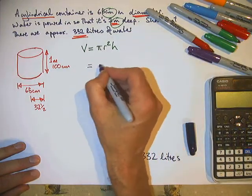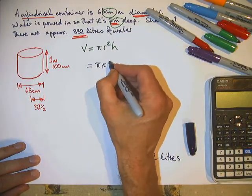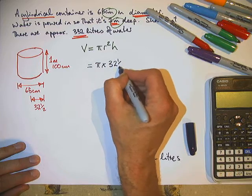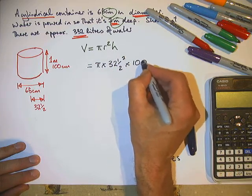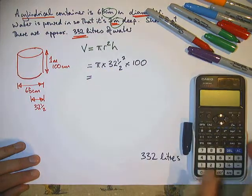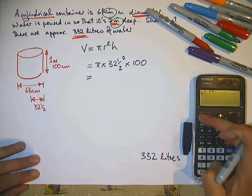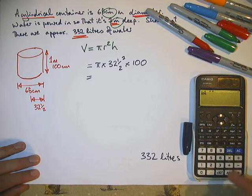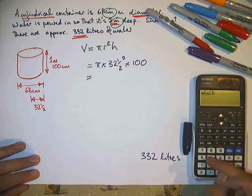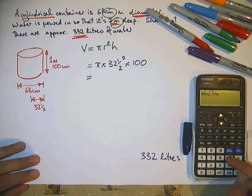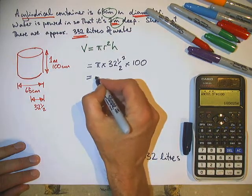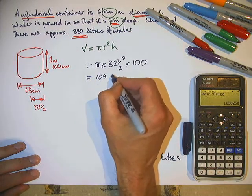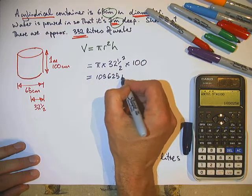We've got pi times 32 and a half squared times 100 will be the volume. So pi times 32.5 squared times 100 is 105,625 pi.